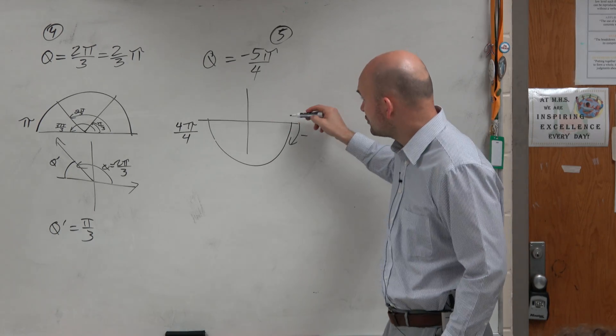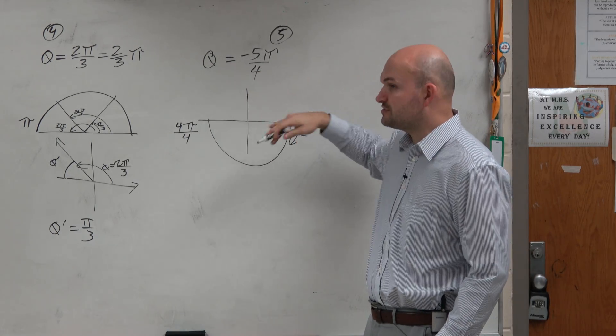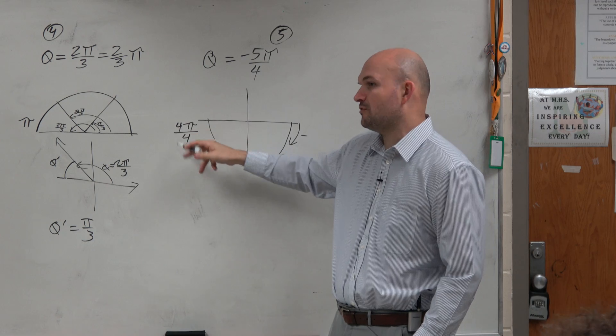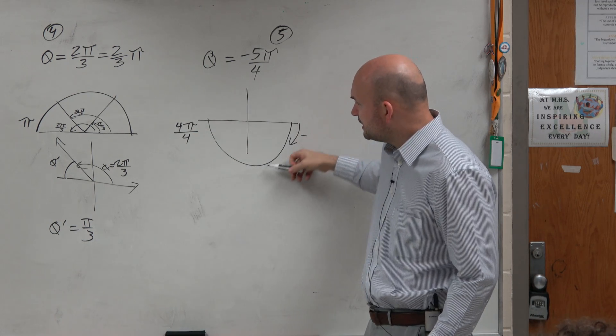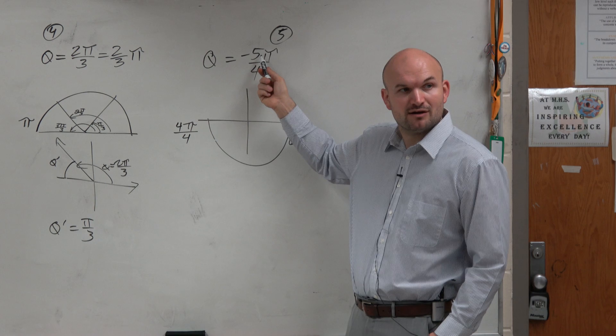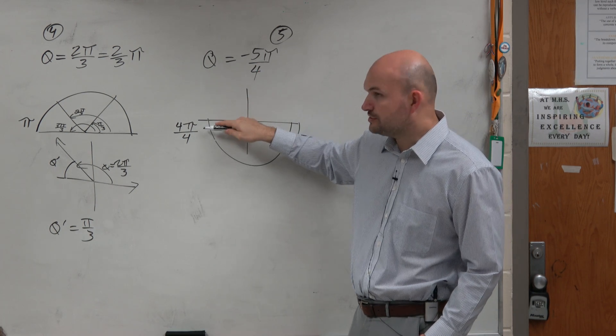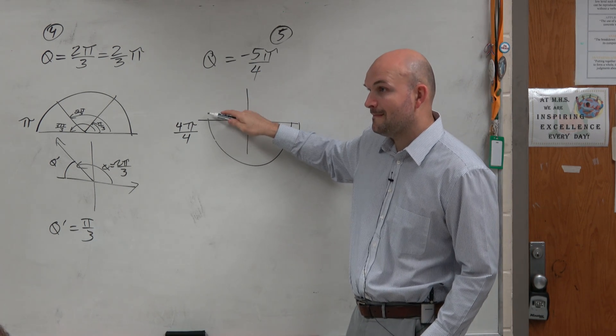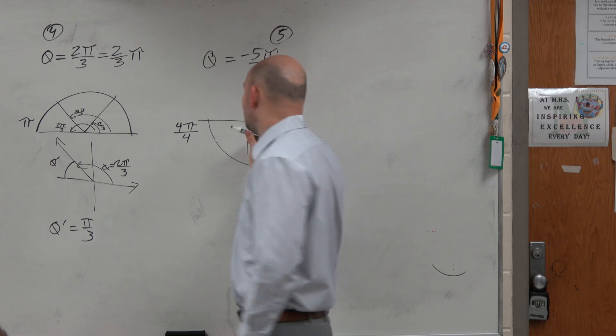But this is important, because I'm traveling. Again, remember, negative just means the direction. So I'm still going to use the positive 4π over 4. But we're traveling from here to here, and my angle is just one more π over 4. So therefore, all I need to do is just travel an extra π over 4.